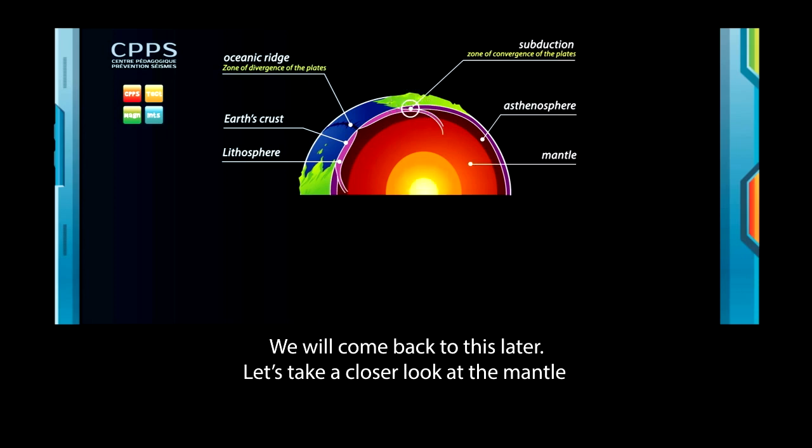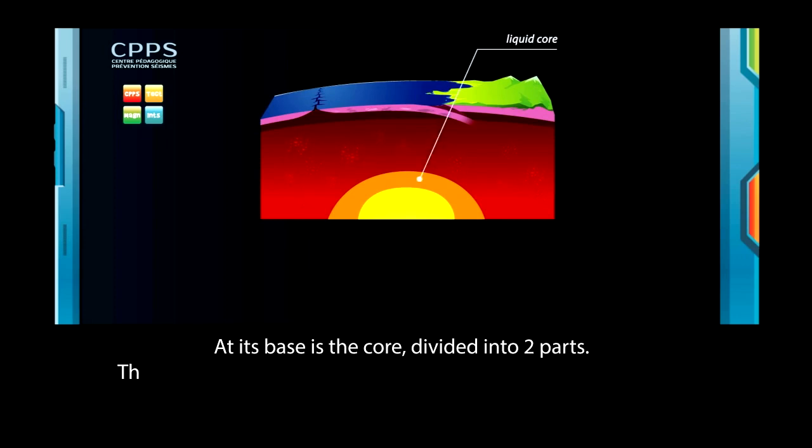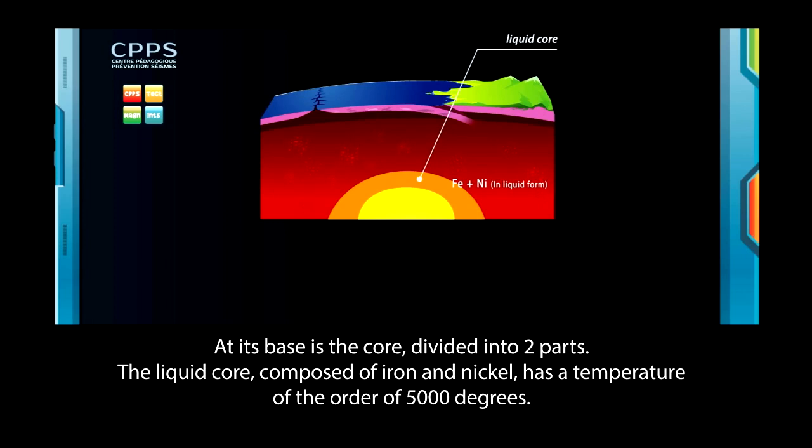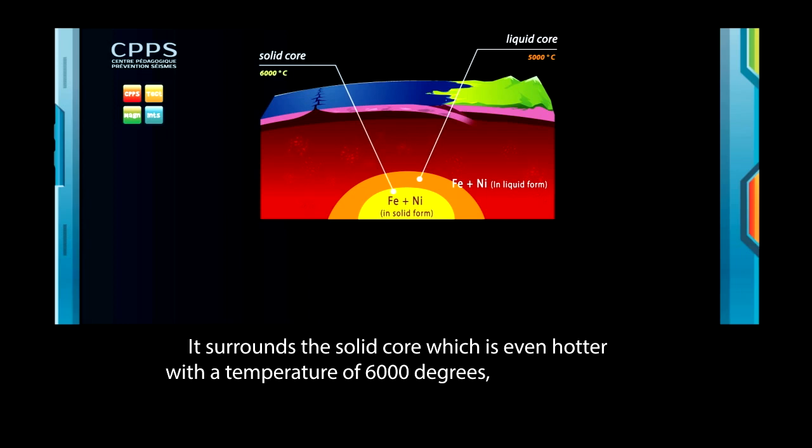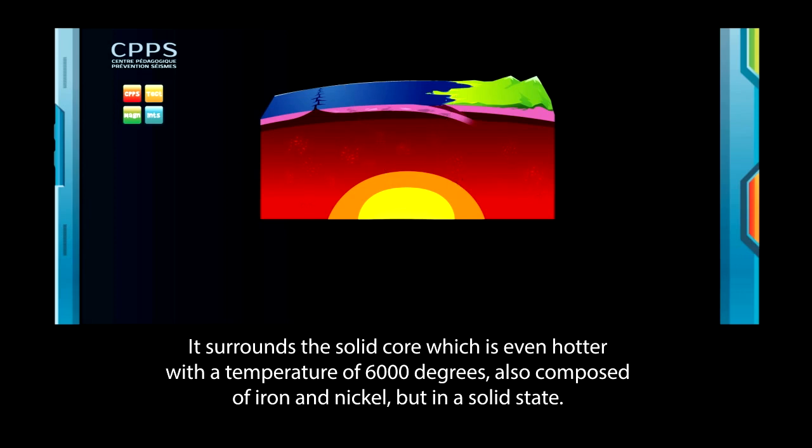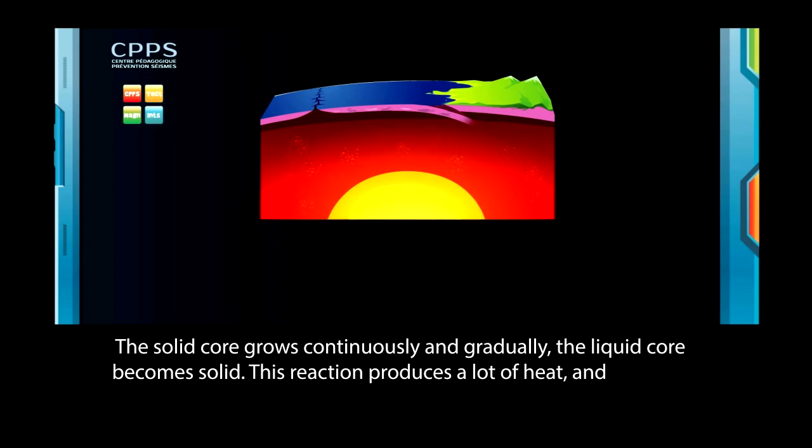We will come back to this later. Let's take a closer look at the mantle. At its base is the core divided into two parts. The liquid core, composed of iron and nickel, has a temperature of the order of 5000 degrees. It surrounds the solid core, which is even hotter, with a temperature of 6000 degrees, also composed of iron and nickel, but in a solid state. The solid core grows continuously, and gradually, the liquid core becomes solid. This reaction produces a lot of heat, and this heat diffuses into the rocks of the mantle.